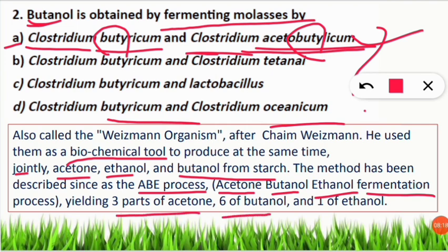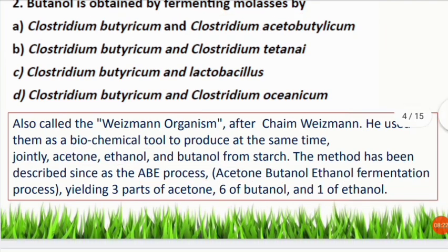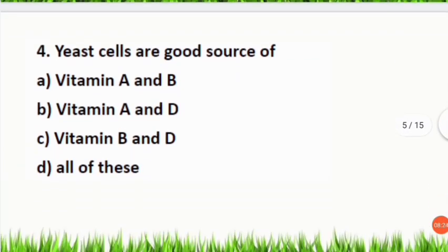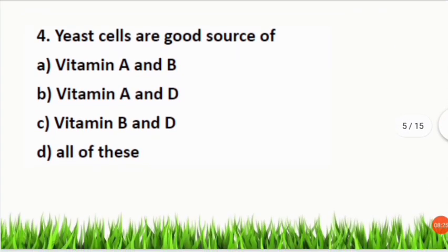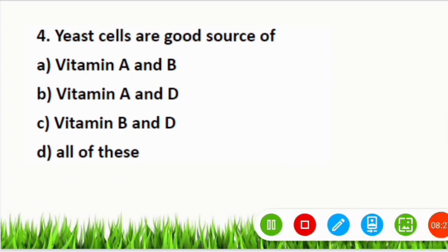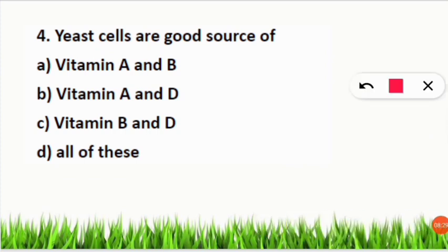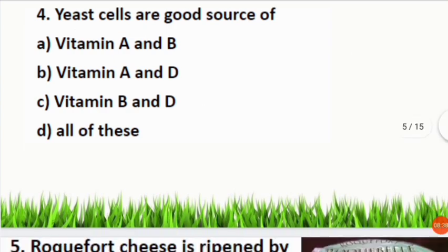The ABE process yields three parts acetone, six parts butanol, and one part ethanol. Q: Yeast cells are a good source of which vitamins? A: Vitamin B and vitamin D.